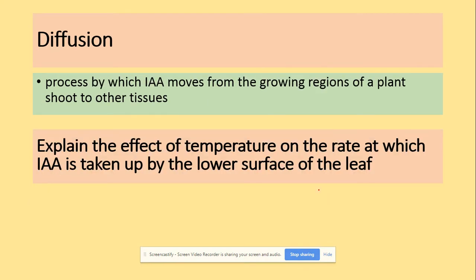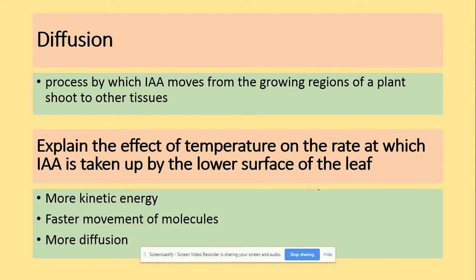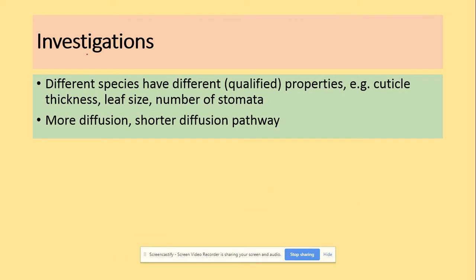Diffusion is the process by which IAA will move from the growing regions of the plant shoot to other tissues. Anything to do with temperature — we need to think about kinetic energy, so more kinetic energy means faster movement of molecules and more diffusion. Because IAA moves by diffusion, in terms of investigations, we would have to look at properties like cuticle thickness, leaf size, and number of stomata, because more diffusion is what we want and we want to provide a short diffusion pathway.